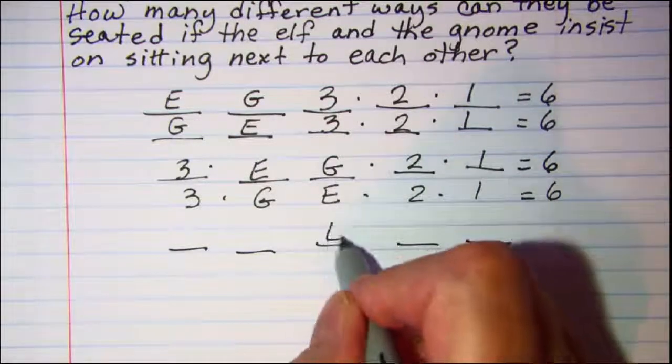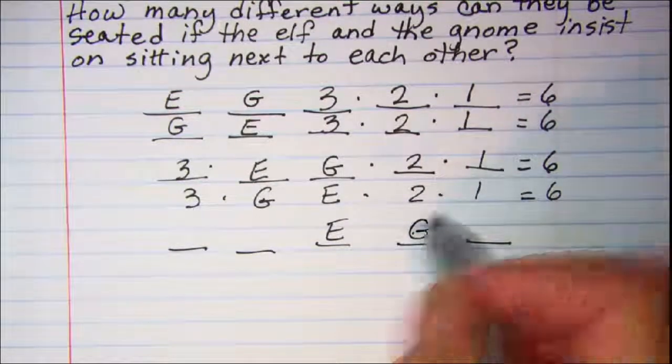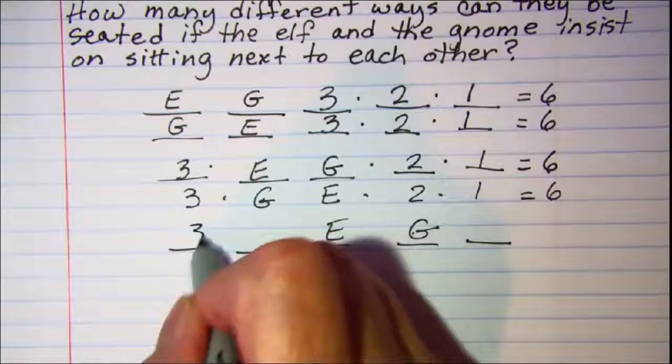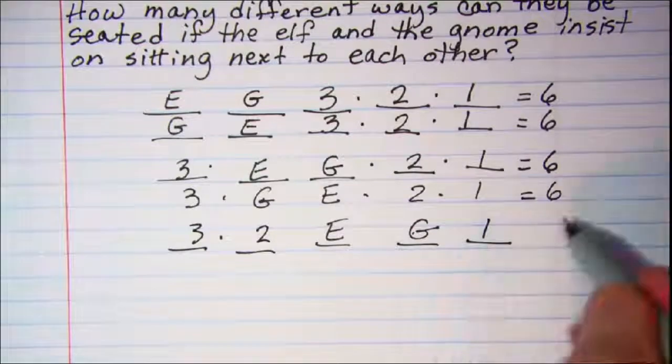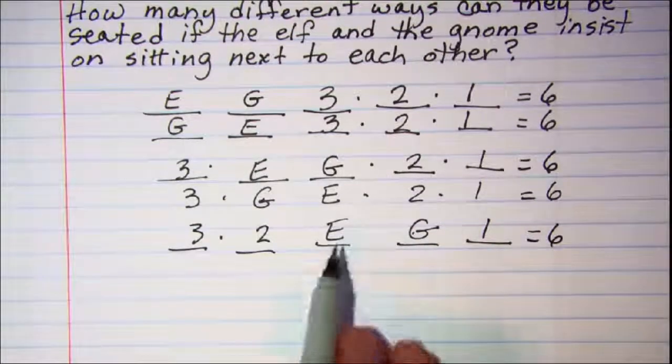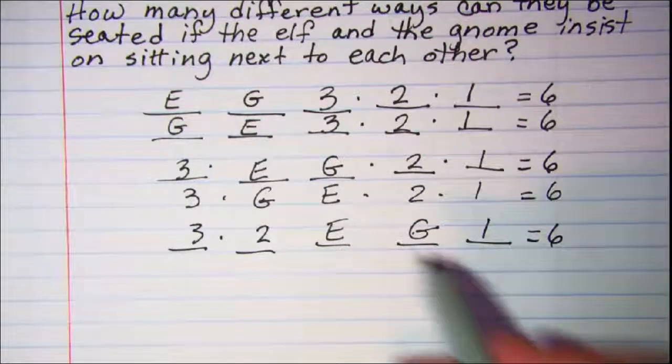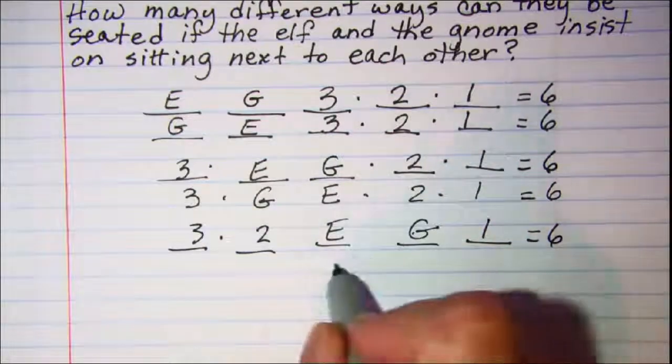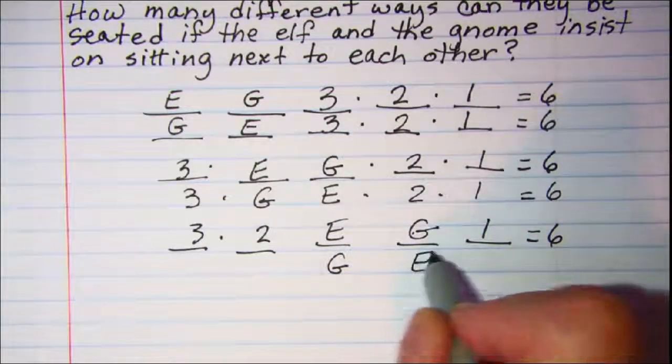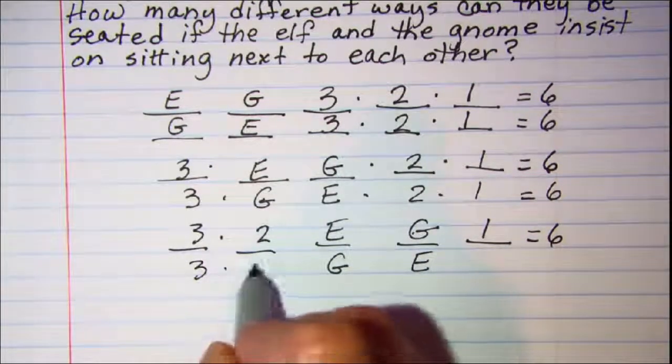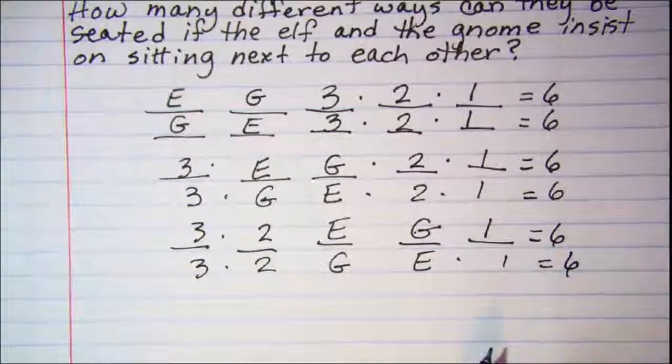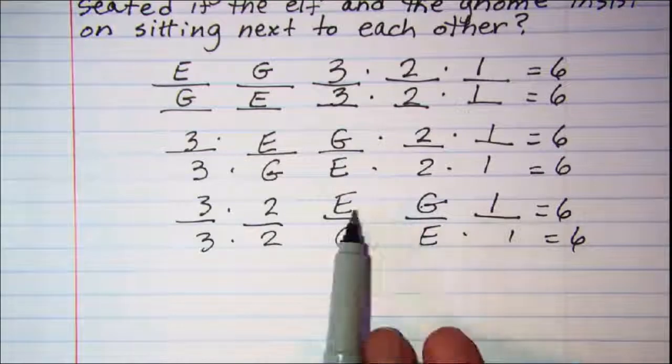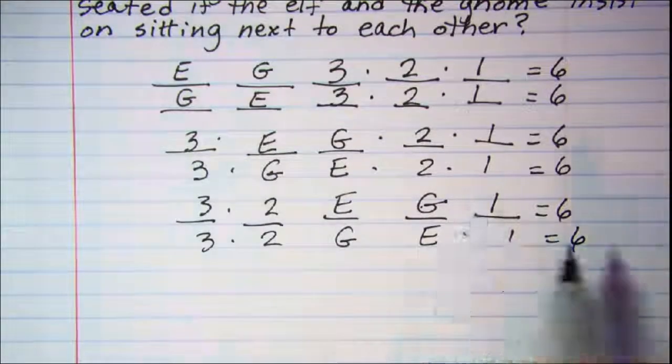And then let's put the elf and the gnome, let's move them over again. So my elf here and my gnome here. Again, three ways, two ways, and one way. That's six. And then if we exchange those chairs, my gnome here and my elf here. I have three times two, and then that gives me six there.